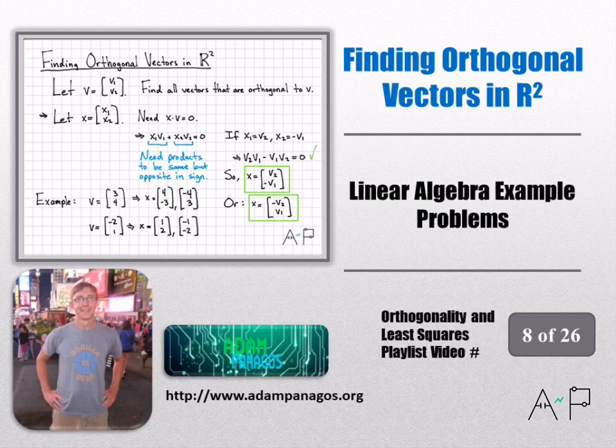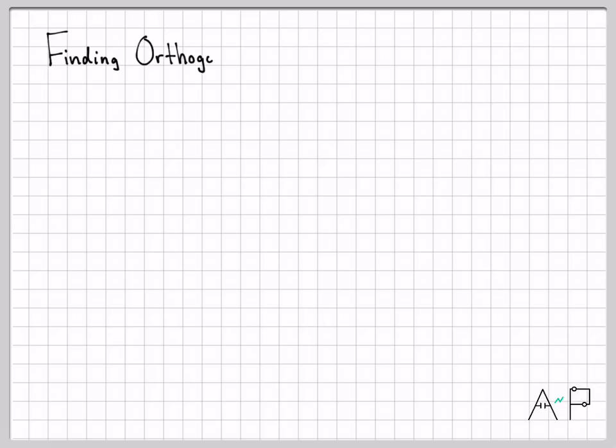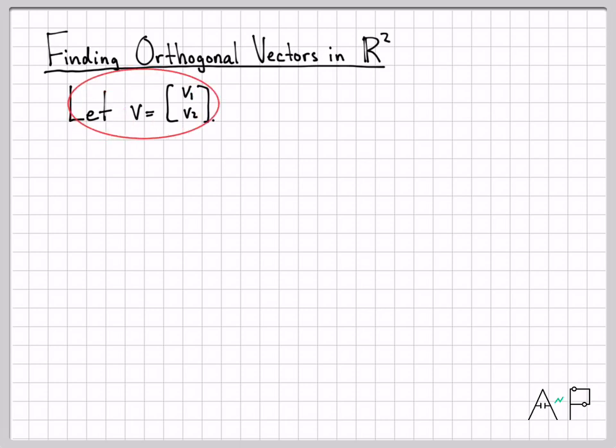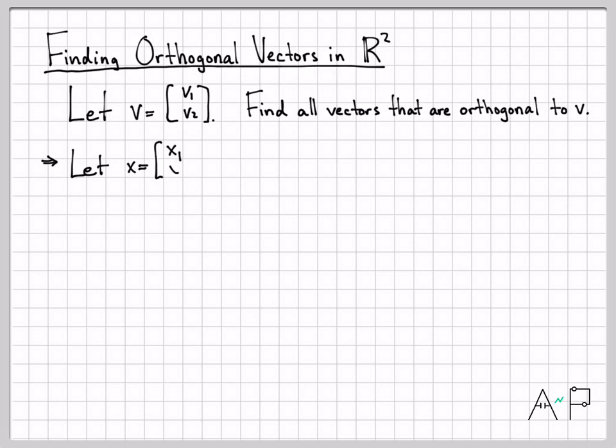So our strategy here is I would like to be able to easily compute some orthogonal vector if you hand me a vector from R². Let's start off generically. Let's pick our vector v as an arbitrary two-dimensional vector in R², so its two coordinates are v₁ and v₂. I want to find all of the vectors that are orthogonal to v, so the vector that I'm about to find